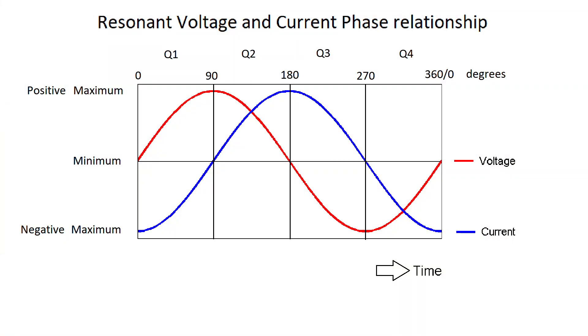For easy explaining I will assume resistance is zero in the system. In real life there is always some resistance which will transform the electric power into heat losses. Let's first take a look at the voltage and current phase relationship of a resonant coil. Let me explain what we see here. This is a single resonant cycle which repeats itself in time.